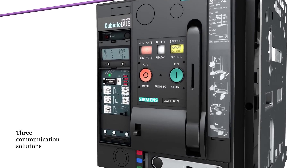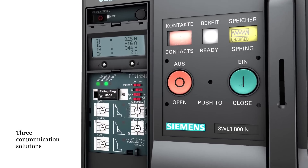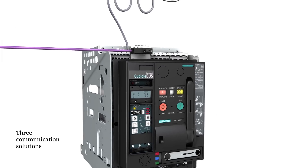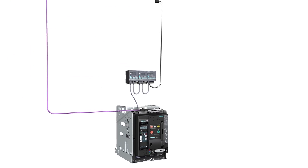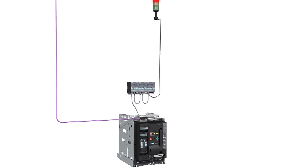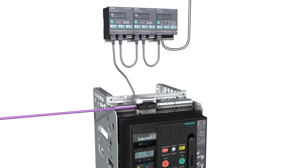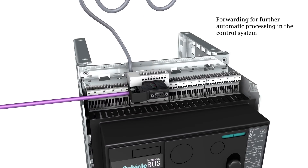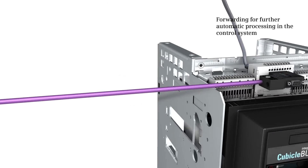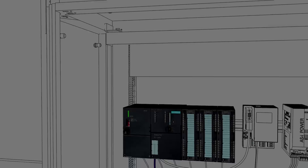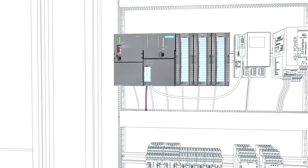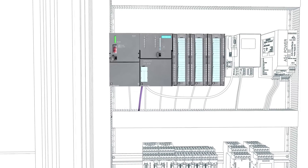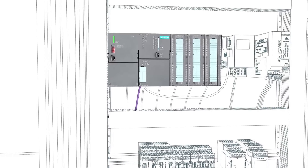The second communication option uses a higher level management system. 3WL air circuit breakers with a communication module send data via Profibus or Modbus to a higher level control system. This processes the recorded data and responds automatically.